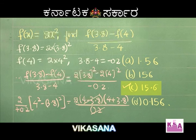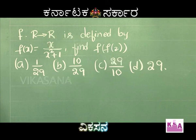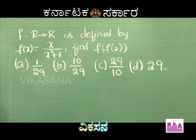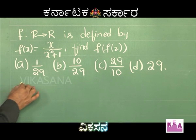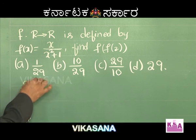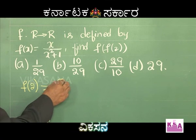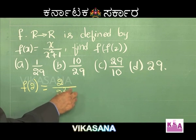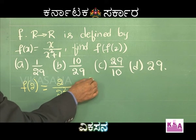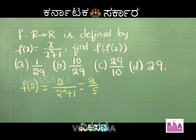Next problem, also from Karnataka CET 2015: f: R→R defined by f(x) = x / (x² + 1). Find f(f(2)). Options: 1/29, 10/29, 29/10, 29. First, f(2) = 2 / (4 + 1) = 2/5.